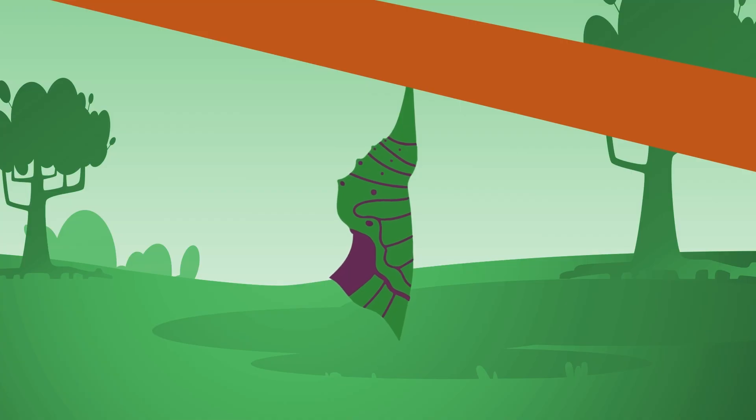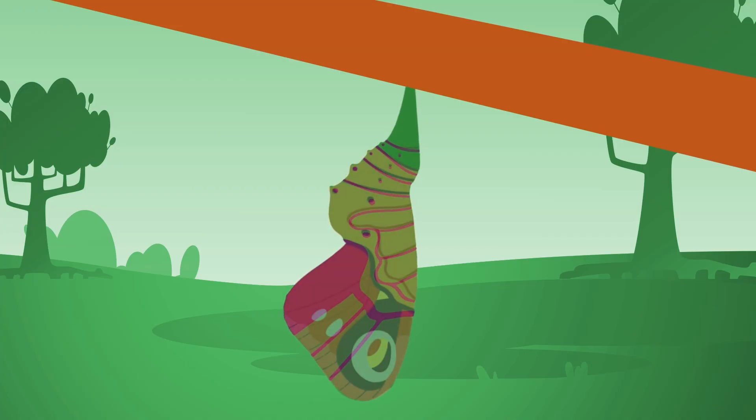This pupa has special cells that turn into legs, wings, eyes, and other parts of the adult butterfly.